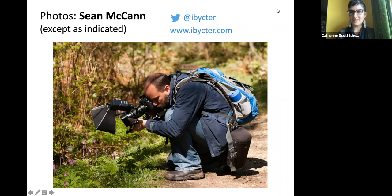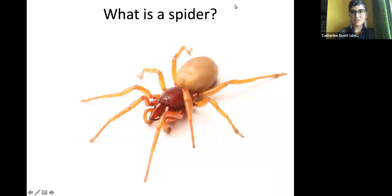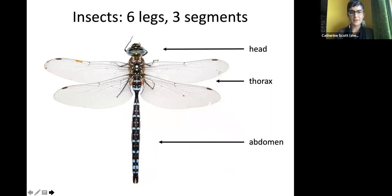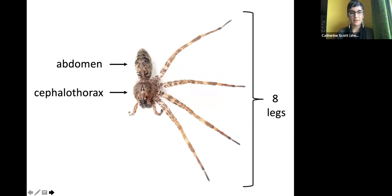This talk is about spiders and their secret lives, but in order to talk about them I want to begin by talking about what spiders are and what they are not. Spiders are not insects. Insects have three body segments — the head, thorax, and abdomen — and three pairs of legs, making six total. Spiders are also arthropods, but they have only two body segments: a combined head and thorax called the cephalothorax, and an abdomen, plus four pairs of legs for a total of eight.